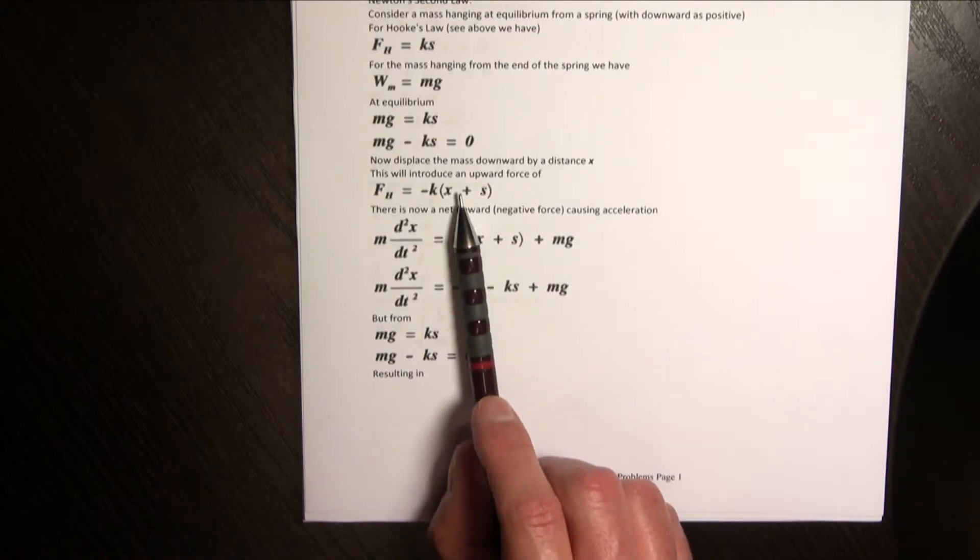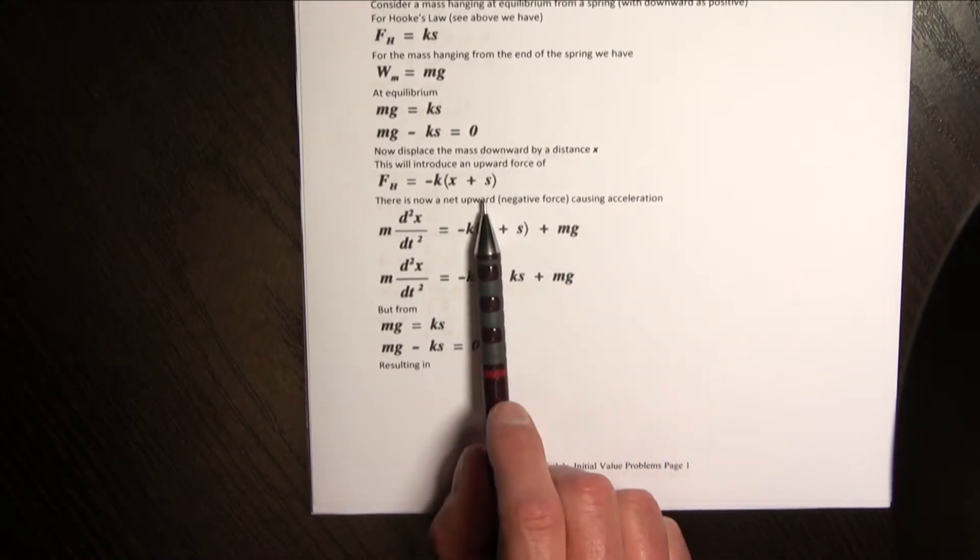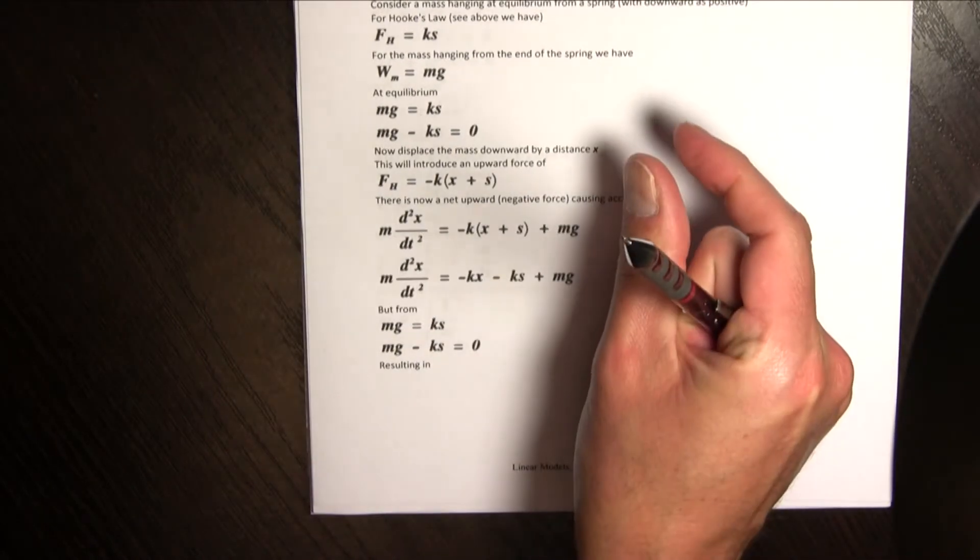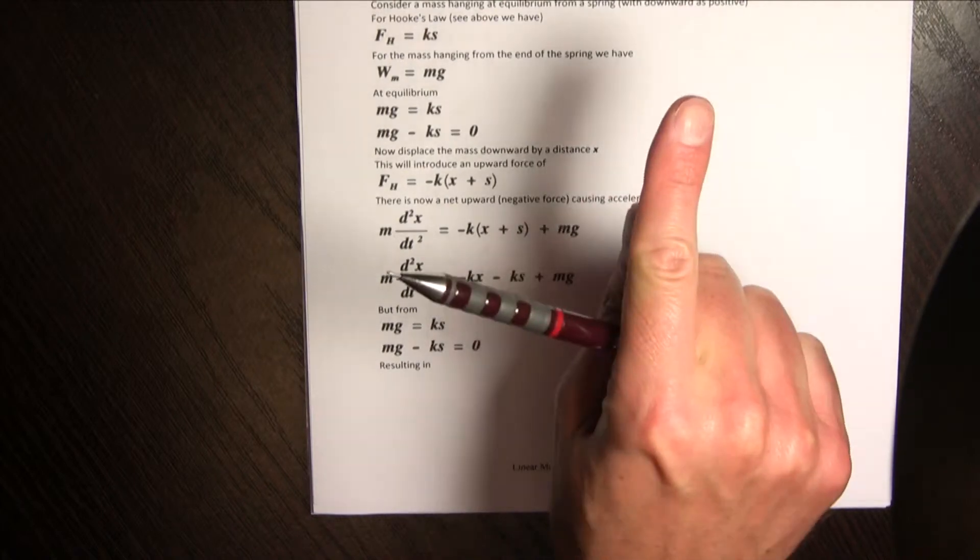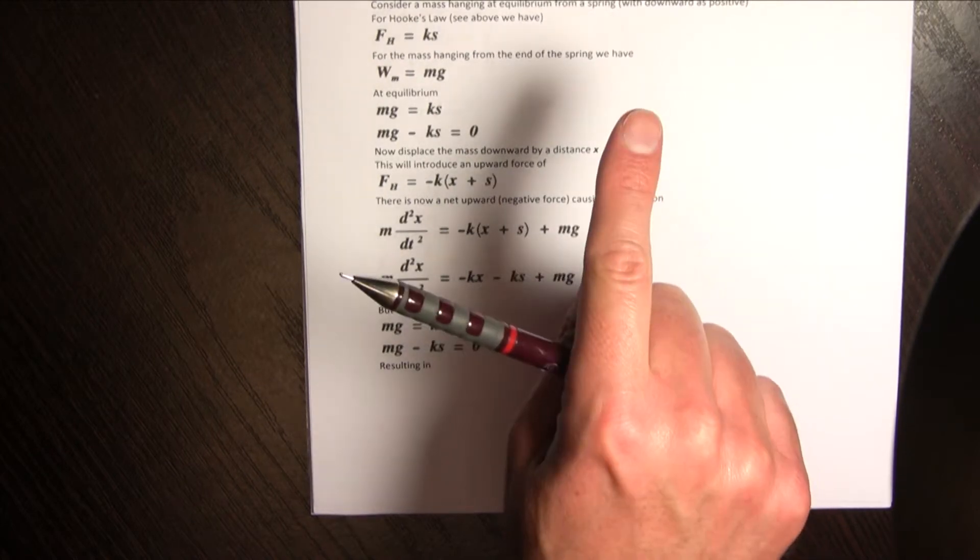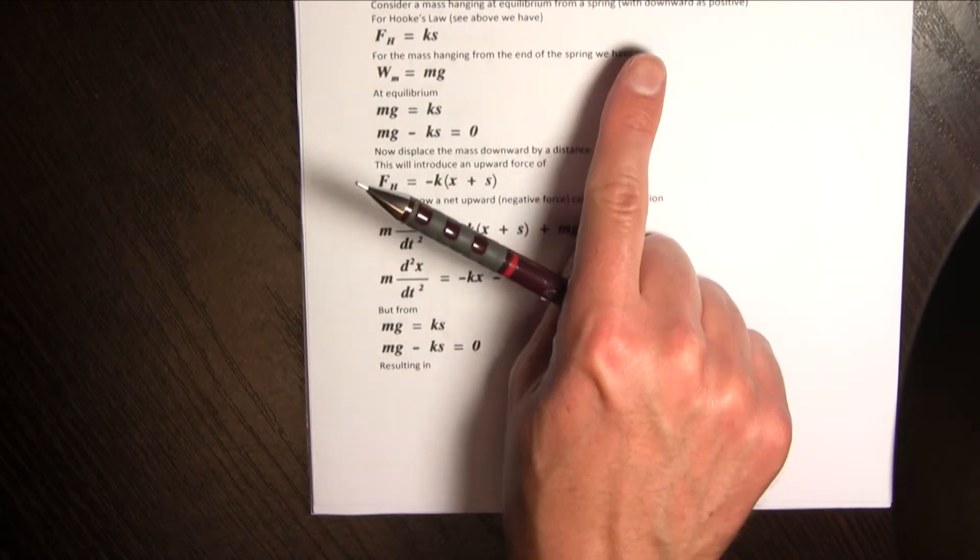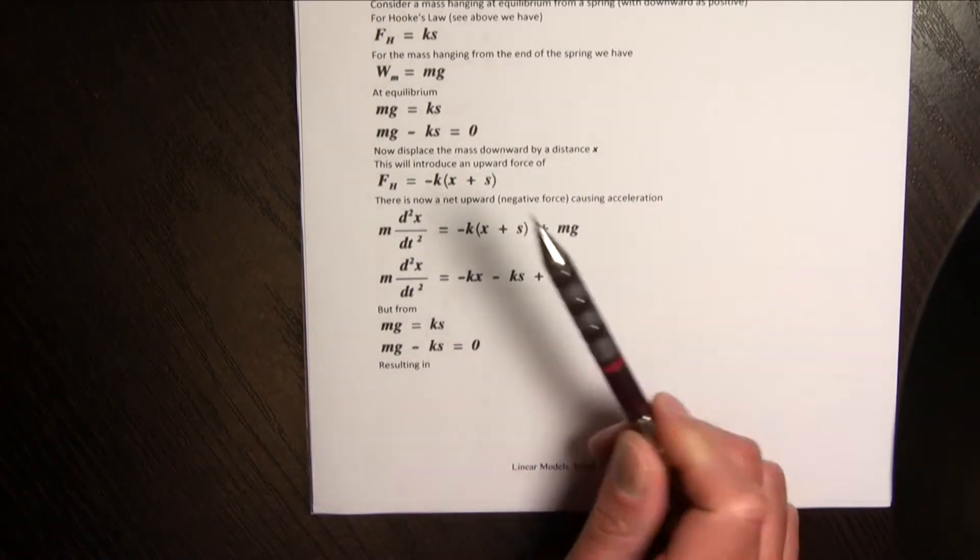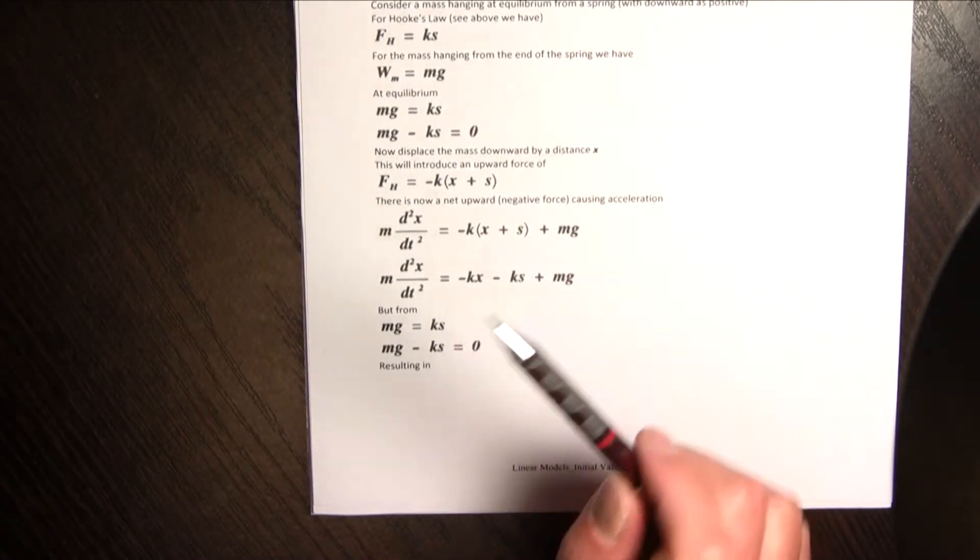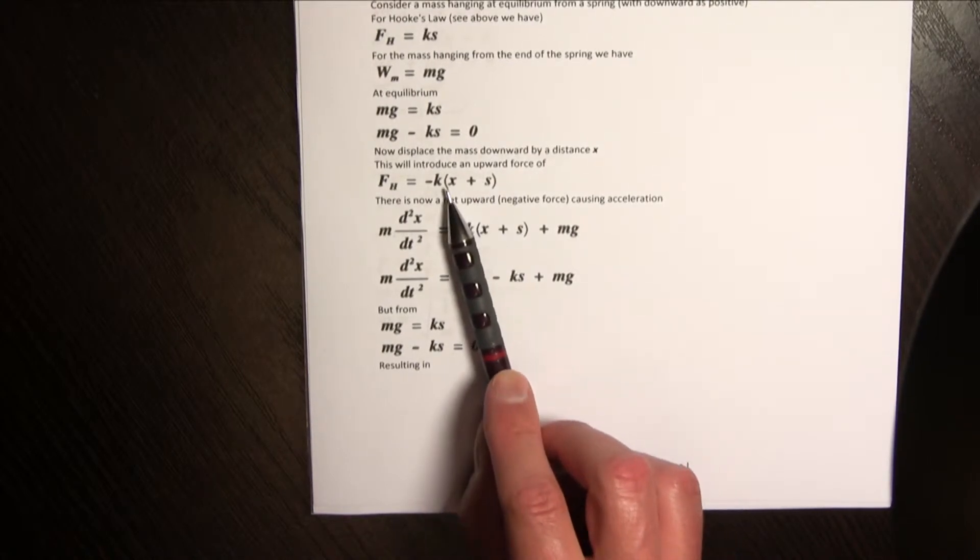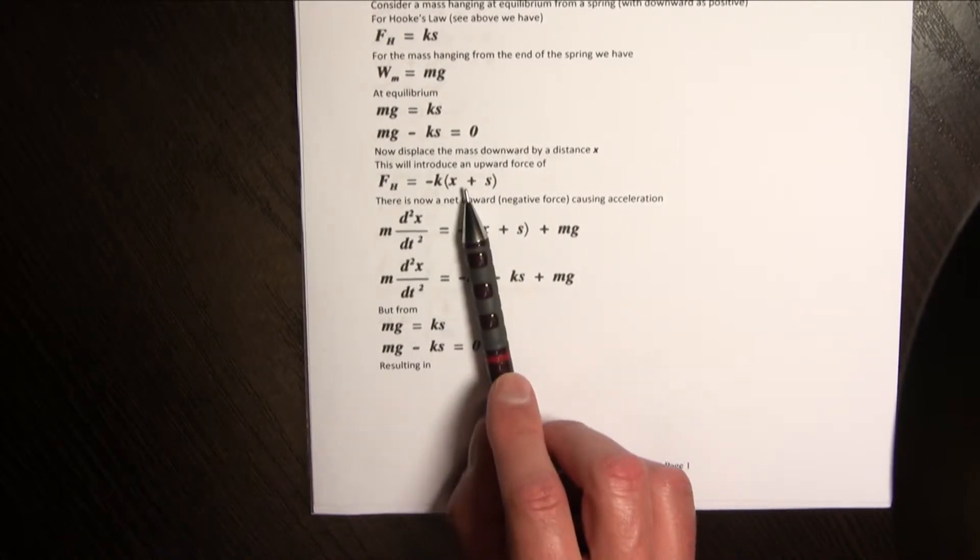So now we're going to have this restoring force being negative k times x plus s, it's going to be the new upward force on that spring. Now because there is this resultant, I've pulled it down and I'm holding it there so from the equilibrium position which already has at that equilibrium force pulling up, the weight pulling down, now I pull it down so there's going to be now a new restoring force because of this extra distance I've pulled it down and this distance is positive x so I've got to add the two distances, now that this s that it was at equilibrium plus this extra x that I'm moving it so that's going to be the new restoring force.